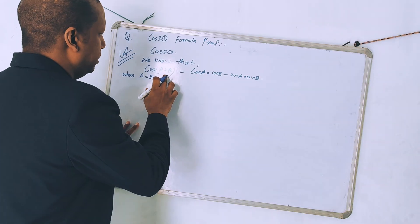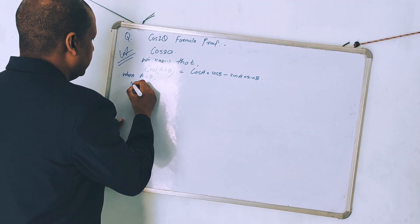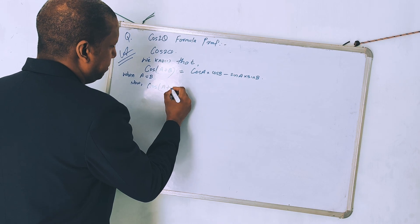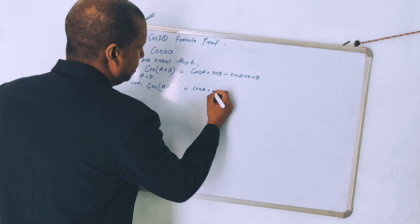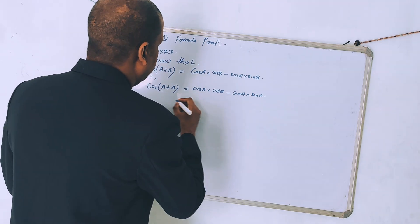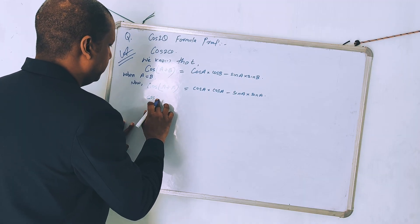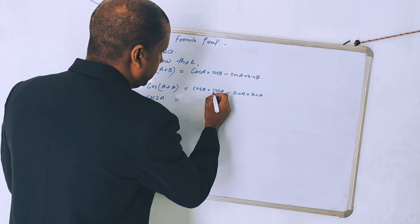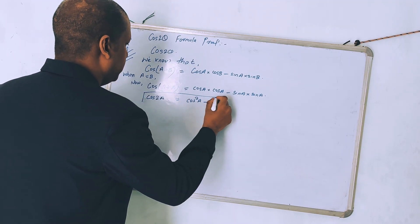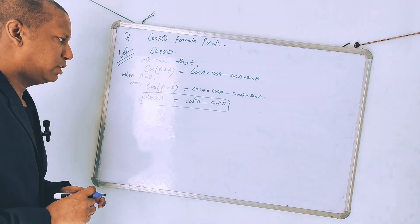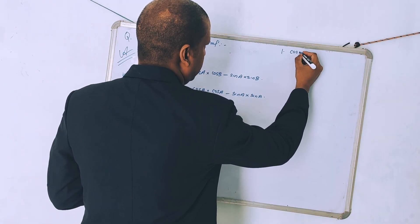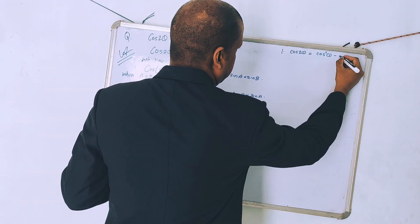Now, when A is equal to B, we put A in place of B. So cos(A + A) is equal to 2A. Then cos A into cos A equals cos² A, and sin A into sin A equals sin² A. So the important formula we get is: cos 2A = cos² A - sin² A.